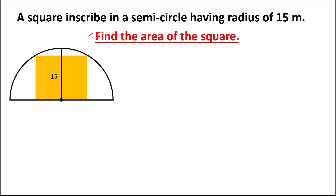From the given, if this one is the radius, that's 15 meters. So this line is also equal to 15. Then if we let this side of the square as x, then this side is also equal to x. And for this side, this is equal to 2x. And also for this side, this is equal to 2x.